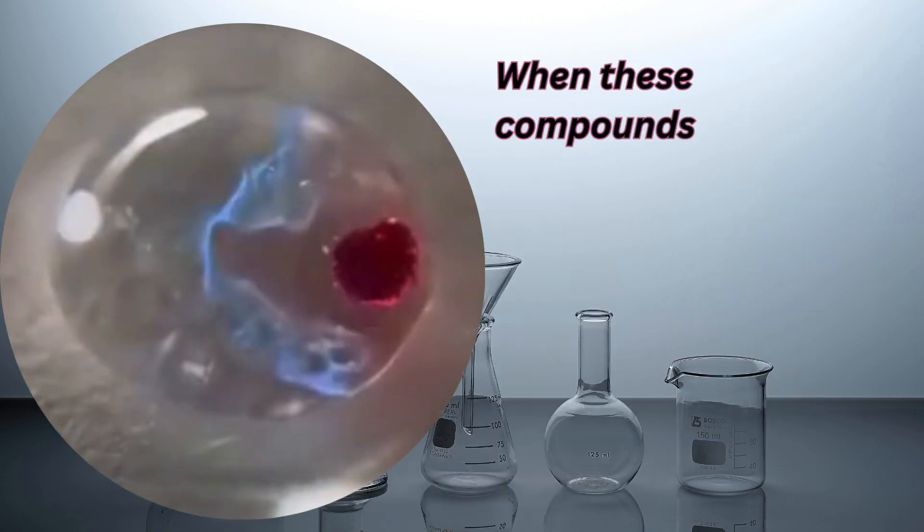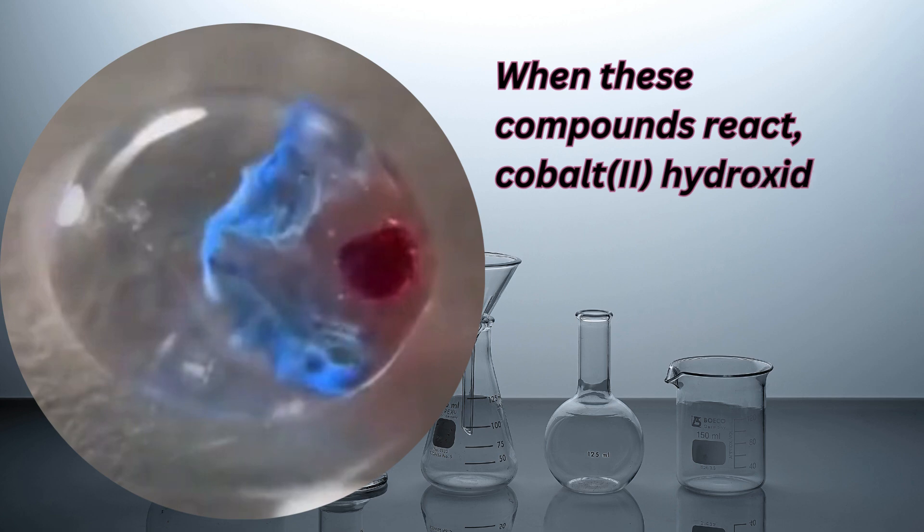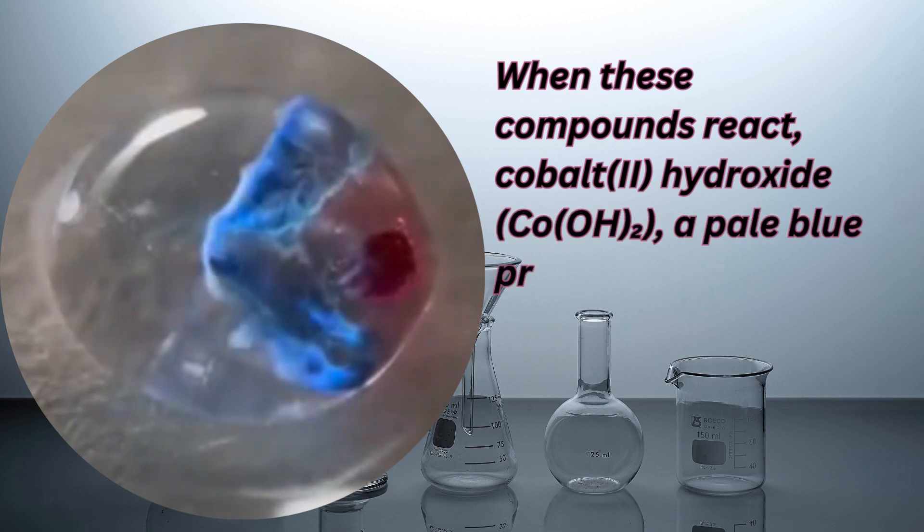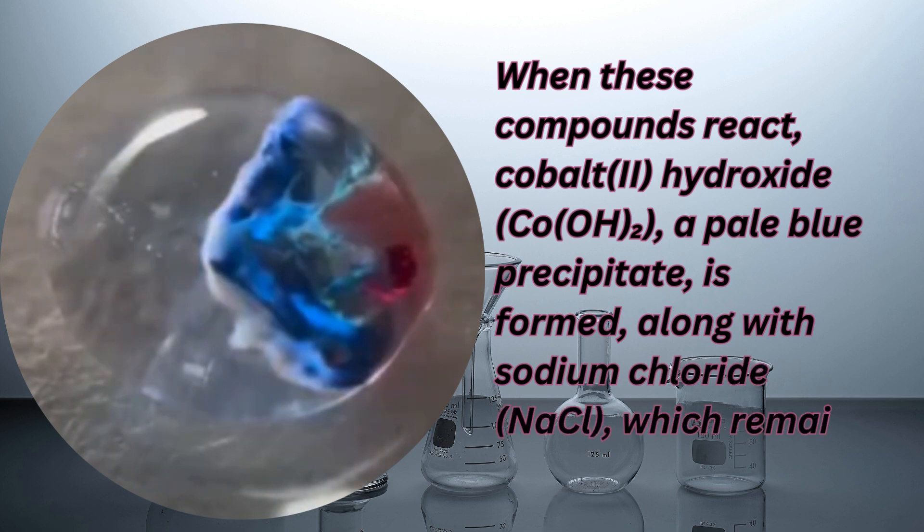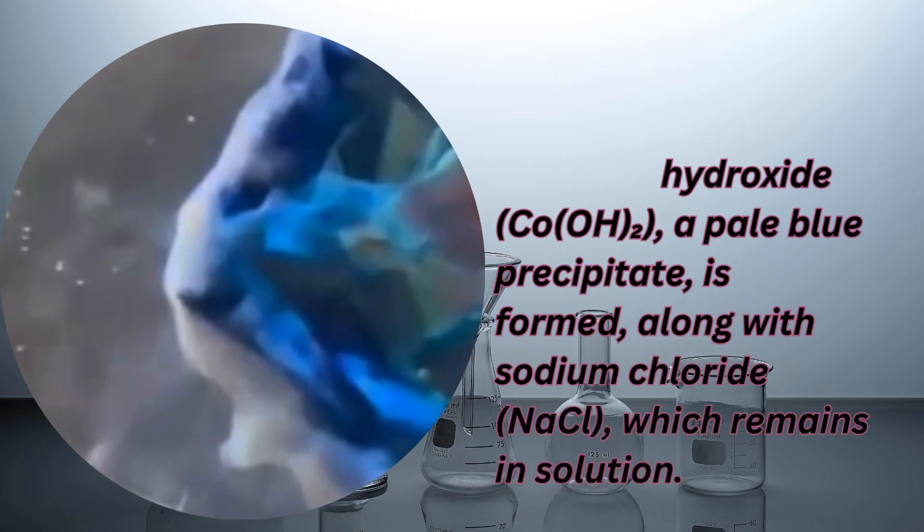When these compounds react, cobalt(II) hydroxide (Co(OH)2), a pale blue precipitate, is formed along with sodium chloride (NaCl), which remains in solution.